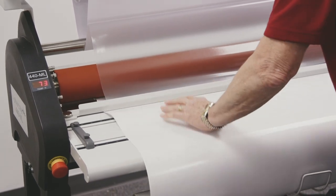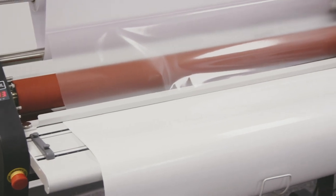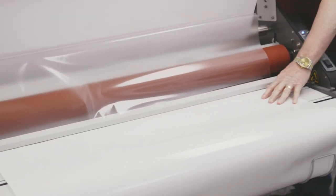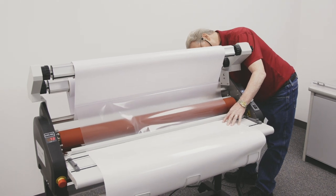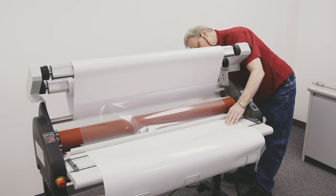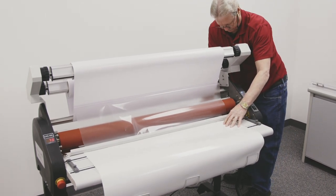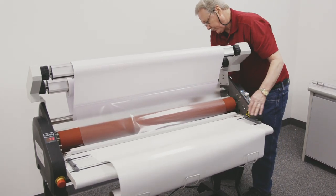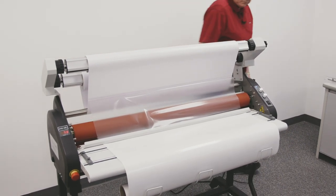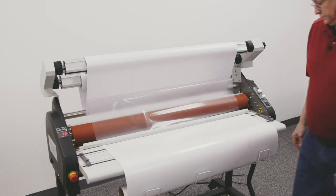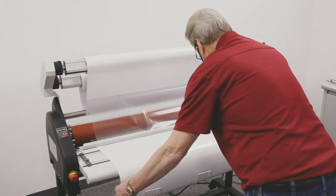So I'll run that through so that I have it coming out the backside. And I want to come around and make sure that I'm not going to wrap up around that roller. We'll line that up to our film.